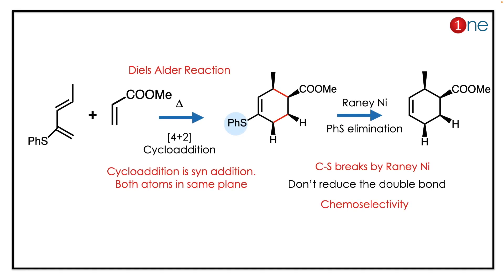By looking at the diene and dienophile, you might recognize this as a Diels-Alder reaction — a four plus two cycloaddition under thermal conditions. The important fact here is that cycloaddition is a syn addition, meaning both atoms add on the same plane, so the ester and hydrogen end up on the same plane.